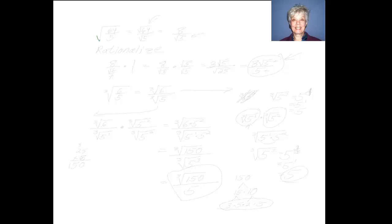Suppose I take the square root of 64 over 5. Well, that's going to be the square root of 64 over the square root of 5. And we know what the principal square root of 64 is. The square root of 64 is 8, so my answer is 8 over the square root of 5.